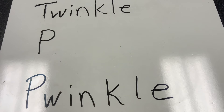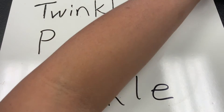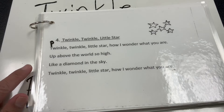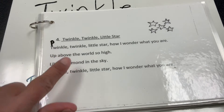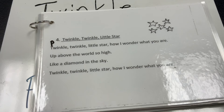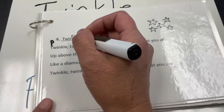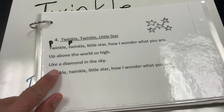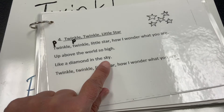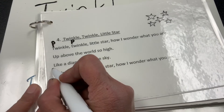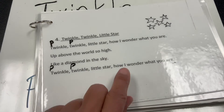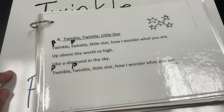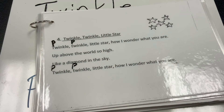So let's change the song to prinkle, prinkle, little star. Now let's sing it together. Prinkle, prinkle, little star, how I wonder what you are. Up above the world so high, like a diamond in the sky. Prinkle, prinkle, little star, how I wonder what you are. So it becomes like a nonsense song now, huh? Silly!